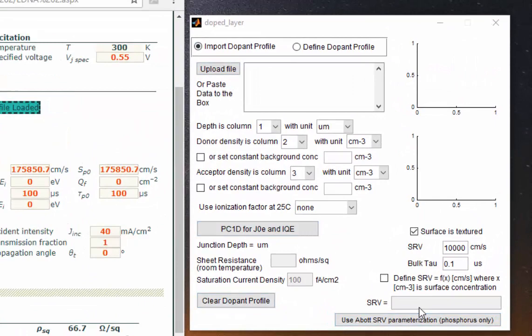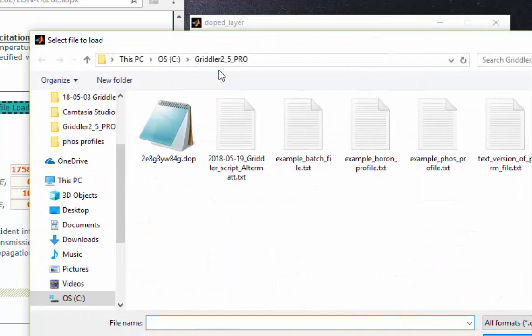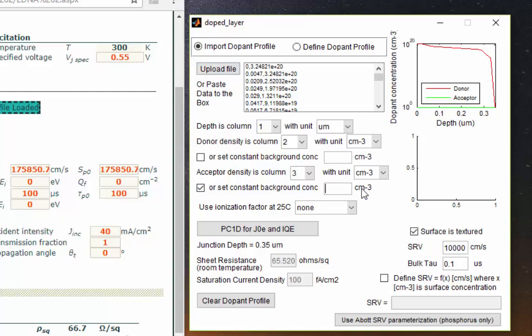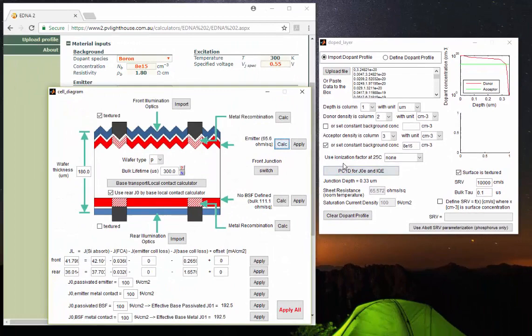Now let us go through the same exercise on the right in the PC1D color of Gridler. So here we are also going to upload profile. The same example, false profile. We're going to set constant background concentration of the boron to also 8E15.